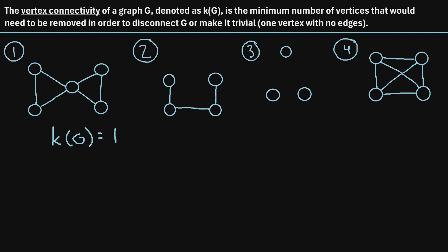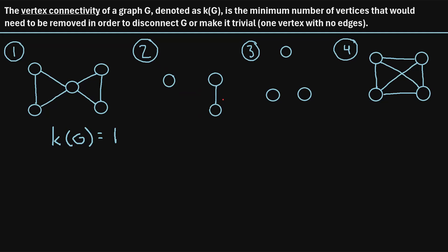If we remove that vertex, this would still be a connected graph because for the remaining vertices we can still get from any vertex to any other vertex just by traveling along the edges. But now if we remove a second vertex, all of a sudden this becomes a disconnected graph because there's no way to get from one vertex to the other remaining vertices by traveling along edges. So we had to remove two vertices, meaning the vertex connectivity, kappa of G, is 2.